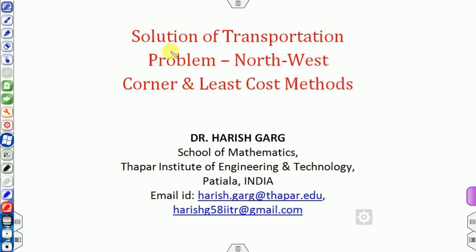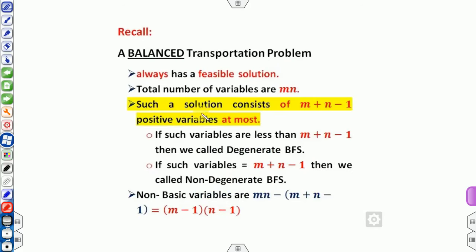We will try to find the solution of the transportation problem using the northwest corner method and the least cost method. To briefly recall the last lecture: we must first convert an unbalanced problem into a balanced transportation problem, either by using a dummy row or a dummy column.